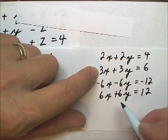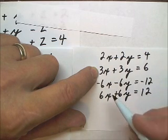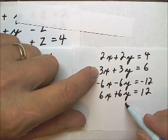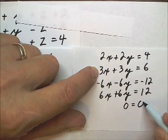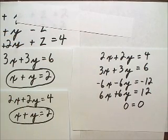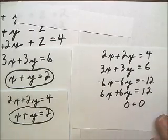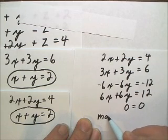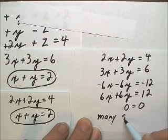Now when I add these two equations together, this adds to 0, this adds to 0, and this adds to 0. So, I get an identity. 0 equals 0. And it's true. Therefore, this system of equations is going to have many solutions. The answer that you would write down is many solutions.